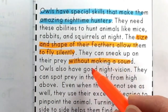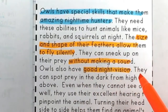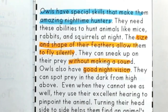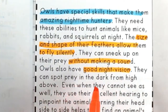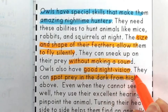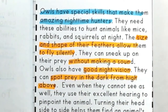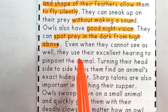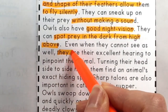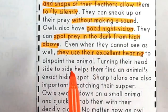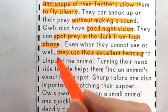Owls also have good night vision. If they couldn't see at night they wouldn't be able to catch tiny animals like mice. People don't have great night vision, but owls have excellent night vision — they can spot prey in the dark from high above, without needing a flashlight. Even when they cannot see as well, they use their excellent hearing to pinpoint the animal, perhaps because it's covered by branches or leaves and not really visible.